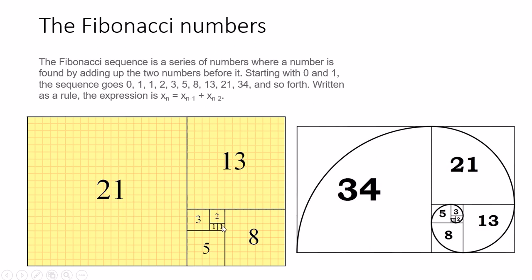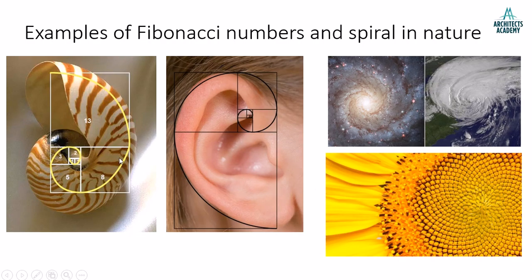If you join the squares in the Fibonacci sequence with an arc extending across them, the diagonals of the squares form a spiral. This spiral is what we actually see in nature — for example, the nautilus shell grows like the Fibonacci sequence, the human ear follows this spiral, and the same pattern is seen in the formation of a galaxy, a typhoon or hurricane, and in the petals or central part of a sunflower.